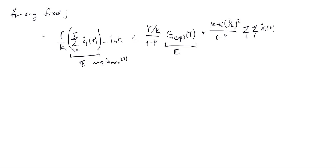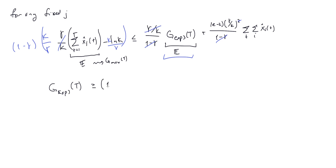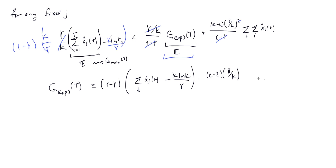We're going to multiply through by k over gamma — putting a factor of k over gamma here and canceling terms — and then multiply through by 1 minus gamma, canceling those denominators. Then we solve for g_{EXP3}. Doing all those steps, we get g_{EXP3} of T is greater than or equal to 1 minus gamma times the sum over t of x_j hat of t, minus k log k over gamma, minus e minus 2 times gamma over k times the double sum over t and i of x_i hat of t.